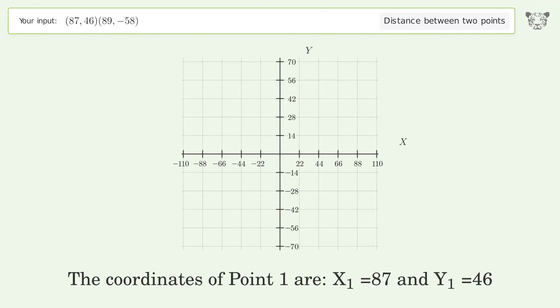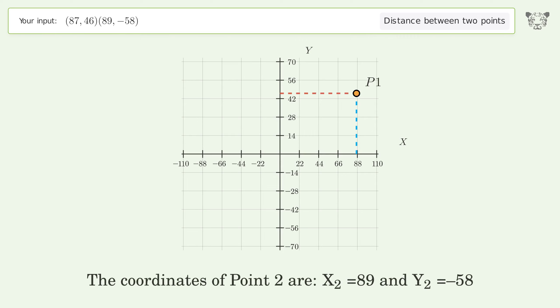The coordinates of Point 1 are x1 equals 87 and y1 equals 46. The coordinates of Point 2 are x2 equals 89 and y2 equals negative 58. d is the distance between the two points.